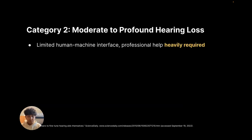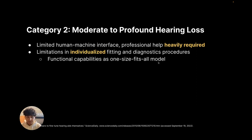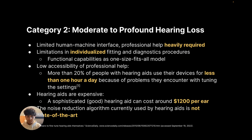For Category 2, the key limitations are more technological, especially including the limited human-machine interface and the individualized fitting and diagnostic procedures. Similar to Category 1, they also suffer from the cost and low availability of professional health.